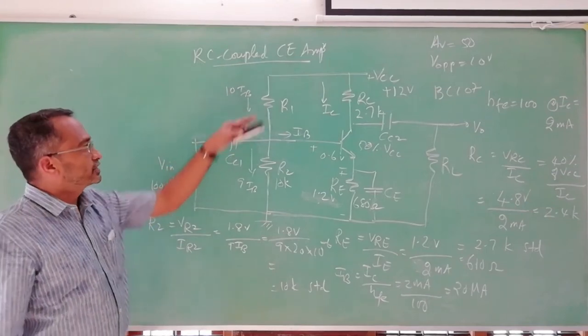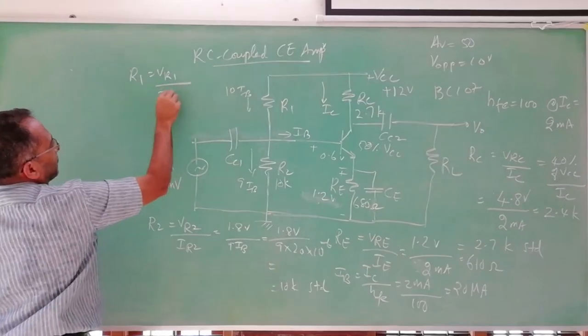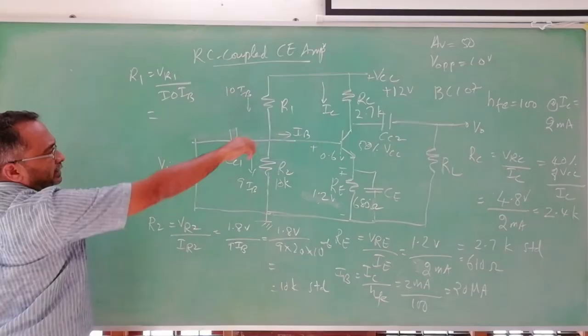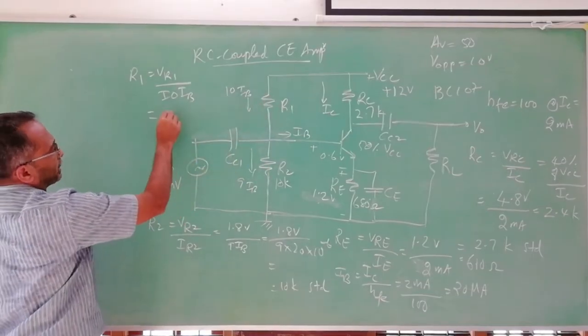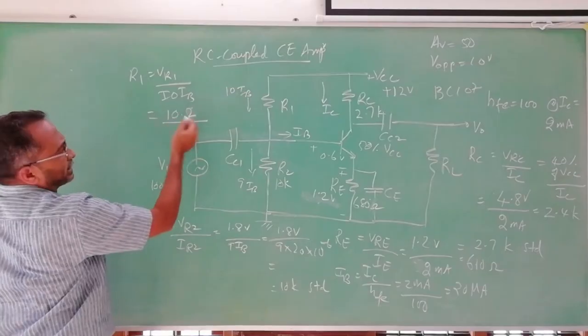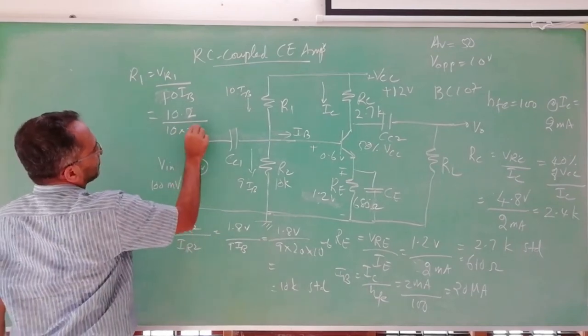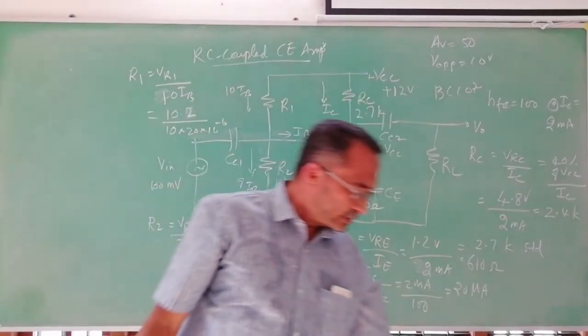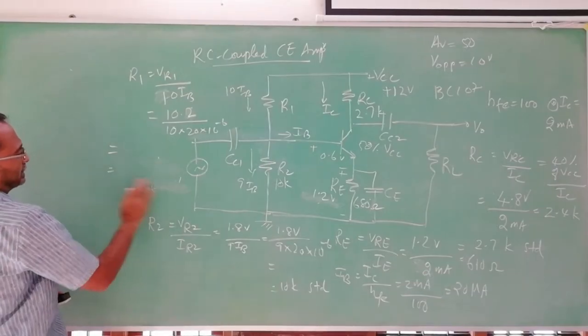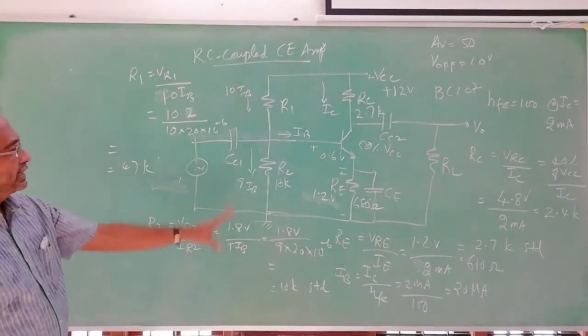Then what is remaining? R1 in this branch. R1 again using Ohm's law, R1 is VR1 by current through that, 10 IB. What is VR1? Total is 12 volt, this is 1.8 volt, so remaining 12 minus 1.8, that is 10.2 volt. Here by 10 IB, 10 into IB is 20 microampere. So that is calculated to be about some value near to 47K. We get some value and that is near to some 47K, but we take a standard value 47K. Now we designed these 4 resistances.